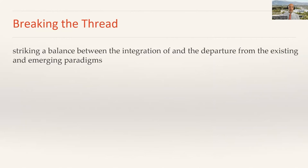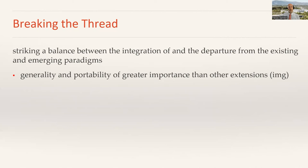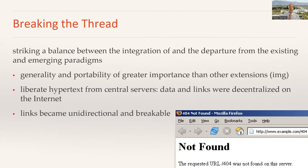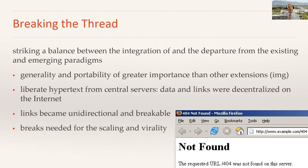The web strikes a balance between integration and departure from existing and emerging paradigms. It breaks some of the threads of the old hypertext systems. Generality and portability were of greater importance than any other extension. It liberates hypertext from central servers — the data and links were decentralized on the internet. The links became unidirectional and breakable; that's the birth of the 404 error. These breaks were needed for scaling and for virality, and were required for the web to take off.